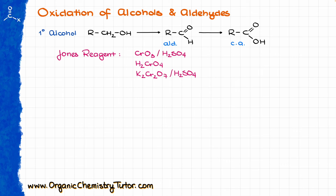The common reagents we are going to use to accomplish this transformation are going to be either the Jones reagent, which is chromium oxide in sulfuric acid, or a couple of modifications: chromic acid itself, or potassium dichromate in sulfuric acid. All of these are going to be aqueous solutions. There are a few other things that could potentially pop up in your course, like potassium permanganate, while all of those are valid oxidizing agents. The most common ones are chromium-based oxidizing agents, and the most common one is the Jones reagent itself. Now, one thing you want to remember about this reaction is that it is not particularly chemoselective, which means that if you have multiple alcohols in your molecule, all the eligible alcohols will be oxidized.